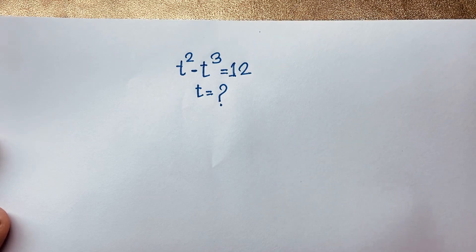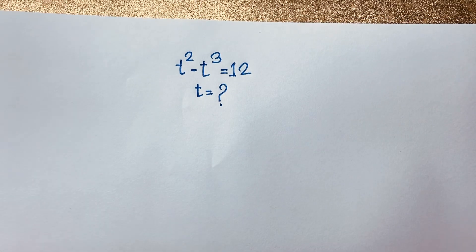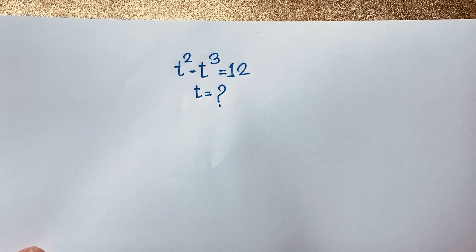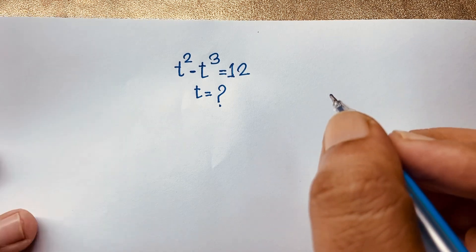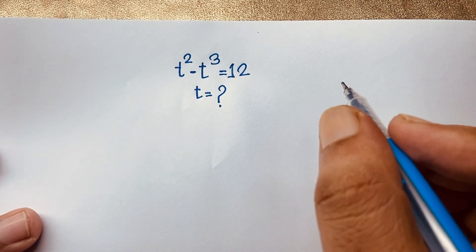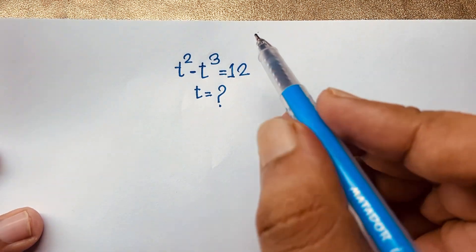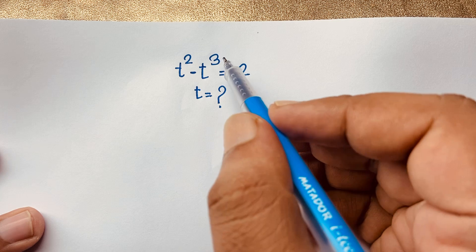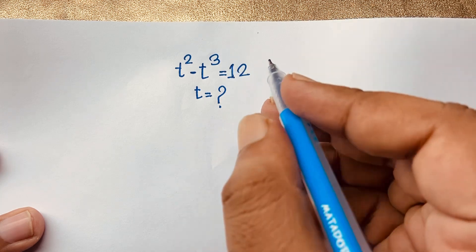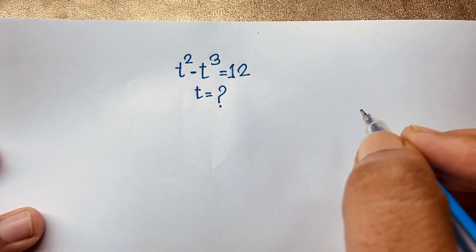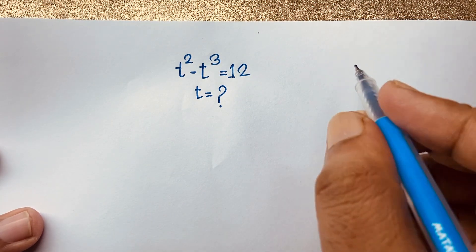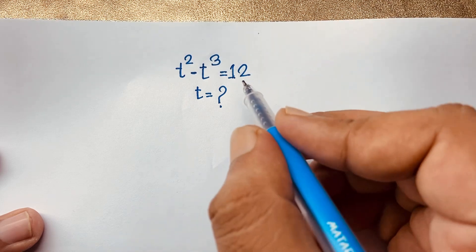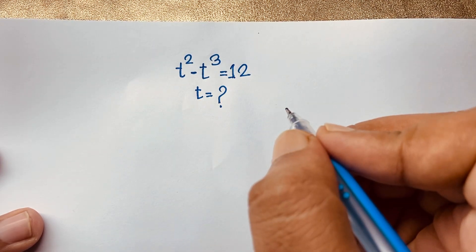Hello everyone. Welcome to Russia's Classroom. Today we have solved a nice exponential math problem. This question is t to the power 2 minus t to the power 3 is equal to 12. t is equal to what? How to solve this interesting exponential math Olympiad question?